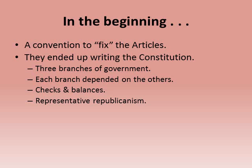The Constitution also has the principle of representative republicanism — the people have a voice in government, but not too much of one. There was a real fear that, since most people weren't well educated in that era, giving the masses too much direct power was risky. So they decided people could participate democratically by electing representatives. We also ended up with a federal system — a stronger central government that shares power with its constituent state governments.